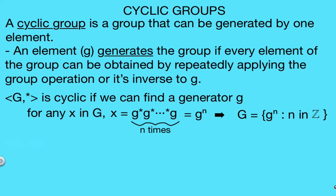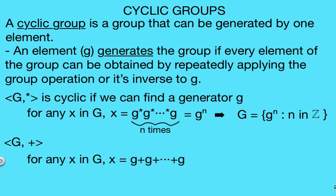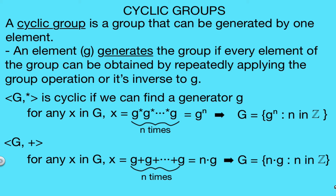Now let's try it with an additive group. If our group G has addition as the binary operation, the idea is the same but written differently. To find a generator g, we need that for any x in G, x can be written as g plus g plus g some number n times — that is, x is the result of adding g to itself n times, which we write as n times g. We can write our group G as n times g where n ranges over the integers. So our group G is cyclic if we can find a generator g where every element can be obtained by repeatedly applying the group operation or its inverse to g.